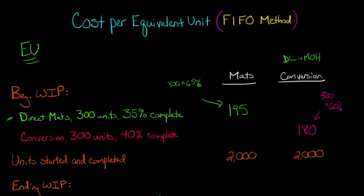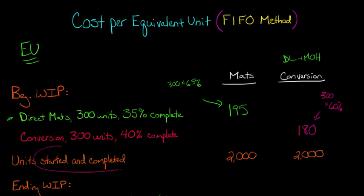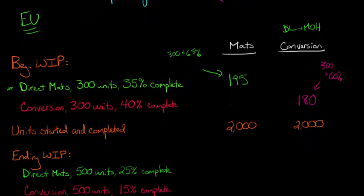Now we need to know the number of units that were started and completed during the period. During this quarter or time period in question, we completed 2,000 units that were started and completed. The beginning WIP units were already partially completed at the beginning of the year. With units started and completed, we're saying these are units that weren't in beginning WIP at all — they were completely started and finished this period. So we have 2,000 in each account.